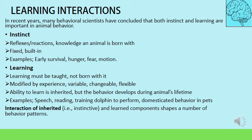Many behavioral scientists have concluded that there are two main types of behaviors: instinct and learning. Instinct refers to the reflexes and natural reactions of an organism that it is born with — the knowledge, reactions, reflexes, and patterns an animal is born with. These are fixed, built-in, and cannot be changed or modified. Examples include early survival reflexes soon after birth, hunger, fear, motion, and imprinting — where an organism, immediately after birth, copies whatever moving object it encounters.